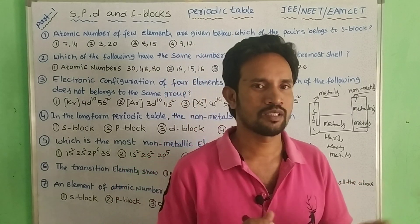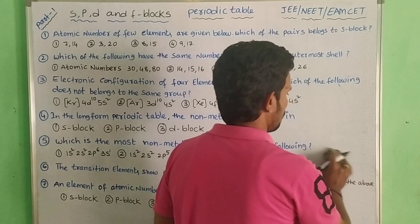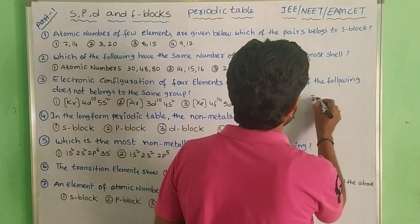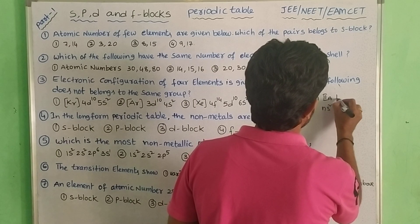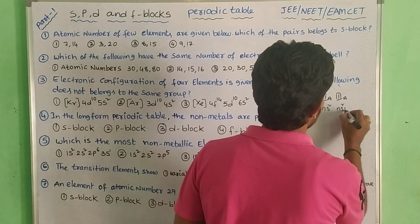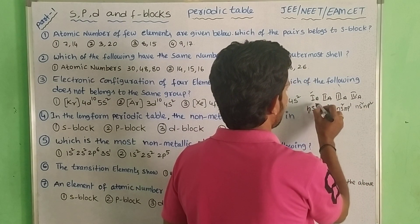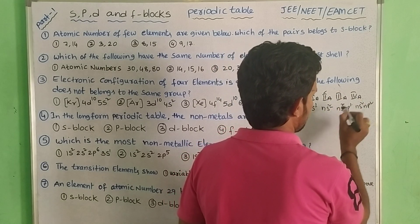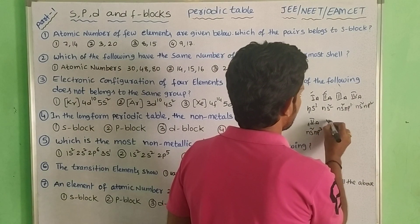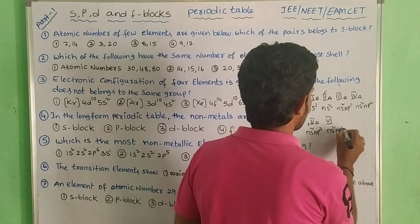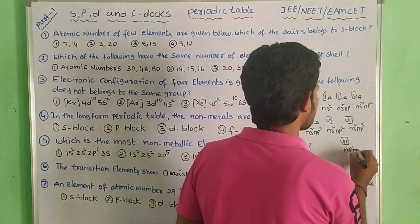To identify a block from electronic configuration: for P-block, group 3 has ns2 np1, group 4 has ns2 np2, group 5 has ns2 np3, group 6 has ns2 np4, group 7 has ns2 np5, and group 8 has ns2 np6. The group number tells you the number of outermost electrons.